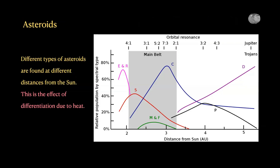Looking at distance from the sun, silicates or stony asteroids occur closer to the sun, carbonaceous asteroids occur slightly farther away mainly between Mars and Jupiter, and metallic ones occur in between. Different types of asteroids are clearly found at different distances from the sun. This tells us that formation is different depending on distance — and what changes with distance is primarily heat. Therefore, heat is probably the reason why composition varies as you go outward from the sun.